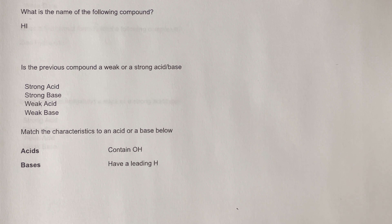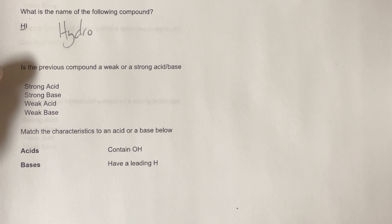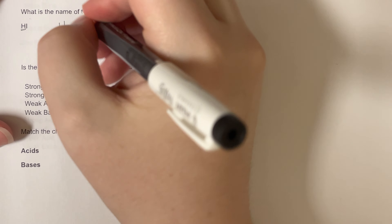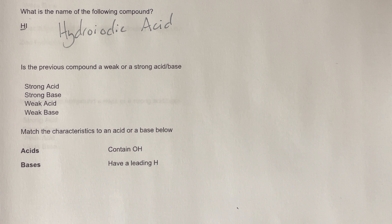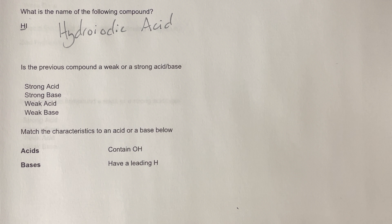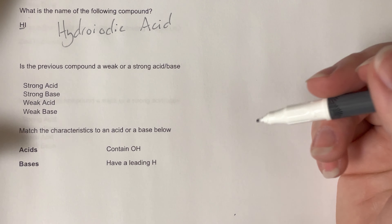What is the name for the following compound HI? Since I am leading with H, this is going to be an acid, and I is just an element off the periodic table, so I need the prefix hydro and I need to change iodine's suffix to '-ic', giving hydroiodic acid. Is the previous compound a weak or strong acid or base? My strong acids include all halogens excluding fluorine, and iodine is in fact a halogen, so that makes this a strong acid.